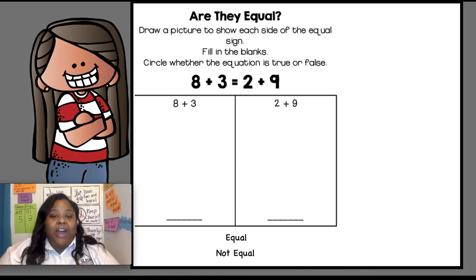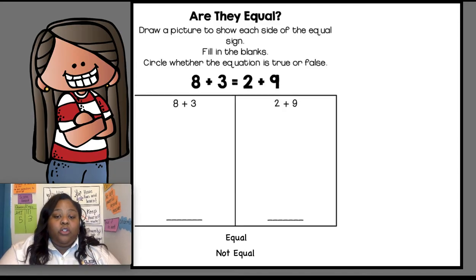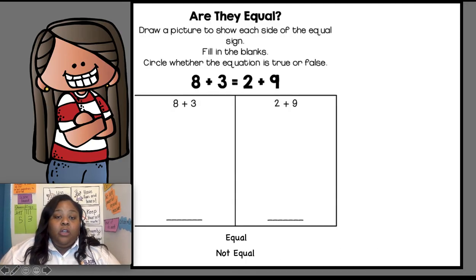Now it's time for our exit ticket. Draw a picture to show each side of the equal sign, fill in the blanks, and circle whether the equation is true or false — equal or not equal. Pause your screen, draw a picture to show each side of the equal sign, fill in the blanks, and circle whether the equation is equal or not equal.